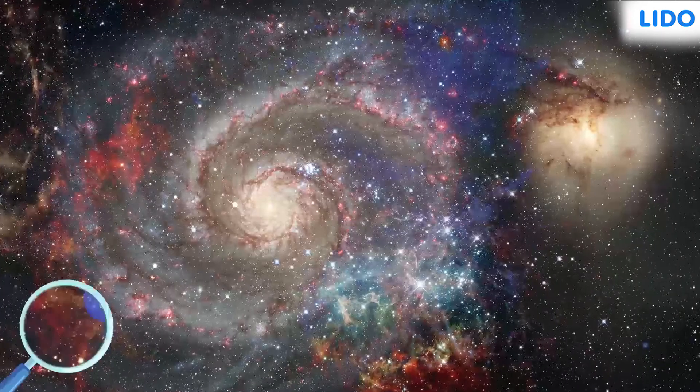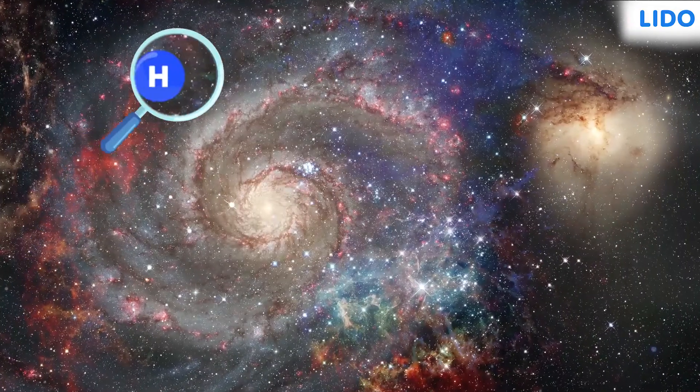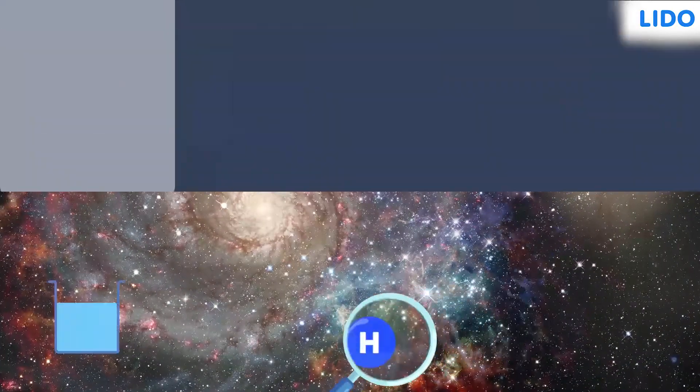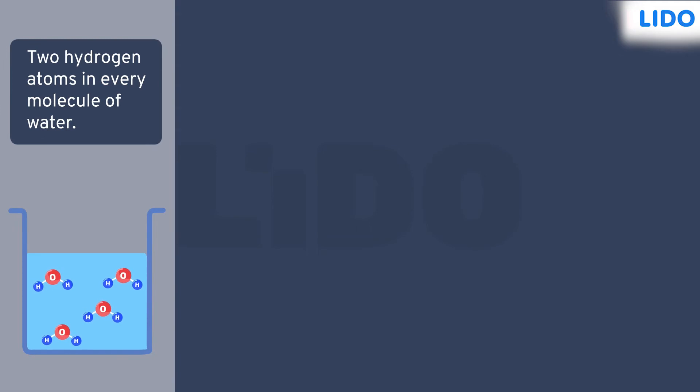However, it is the most common element in the universe, making up about 75% of its mass. Water is made up of two hydrogen atoms combined with an oxygen atom, so there are two hydrogen atoms in every molecule of water on planet Earth.